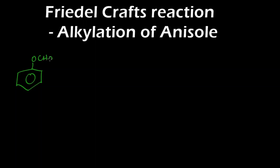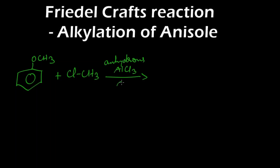In this video we are going to learn the Friedel-Crafts reaction of anisole. First we are going to do alkylation, that is addition of an alkyl group to anisole. We are going to react anisole with methyl chloride, CH3Cl. The catalyst is anhydrous AlCl3 (aluminum chloride) and carbon disulfide.